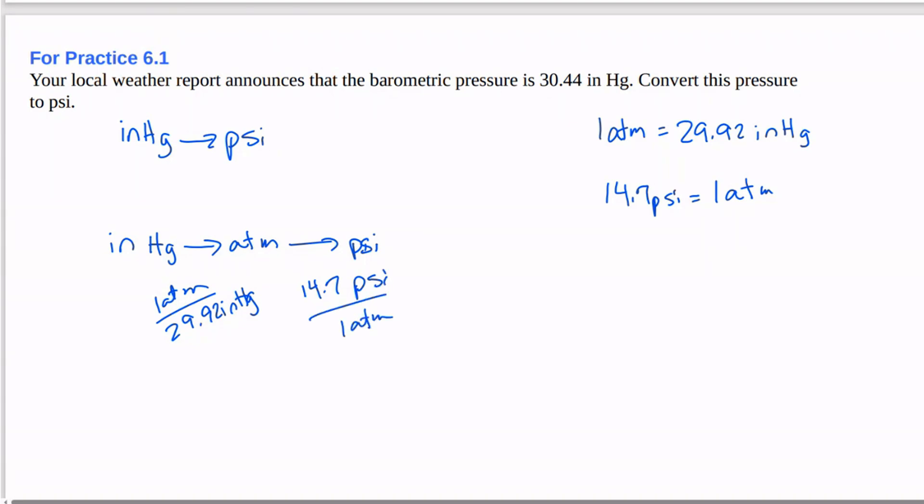So let's go ahead and set it up. 30.44 inches of mercury. So we need to put inches of mercury on the bottom. And 14.7 PSI is 1 atmosphere.